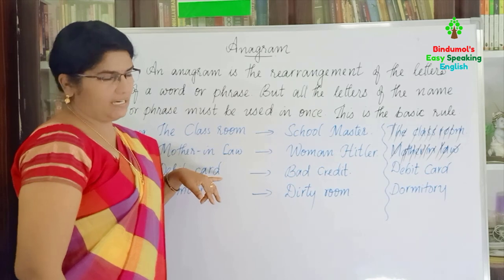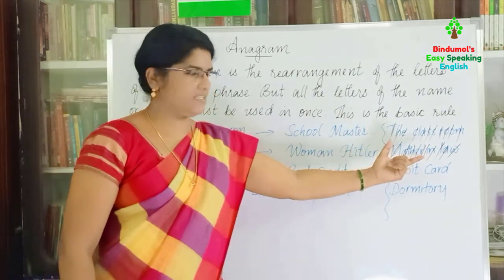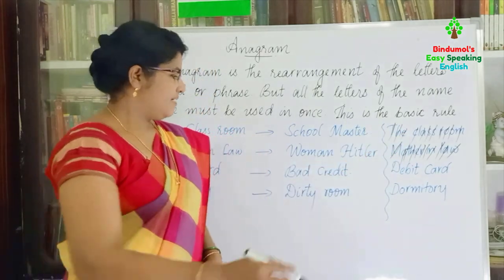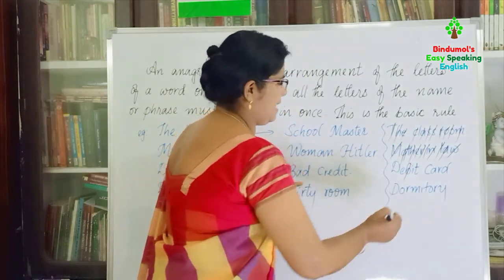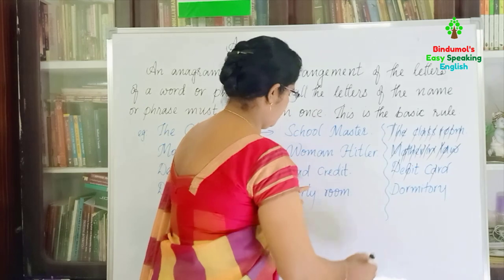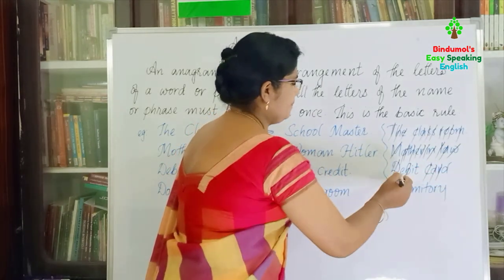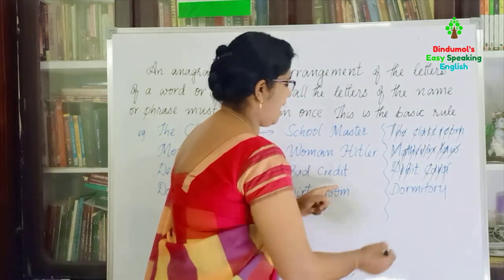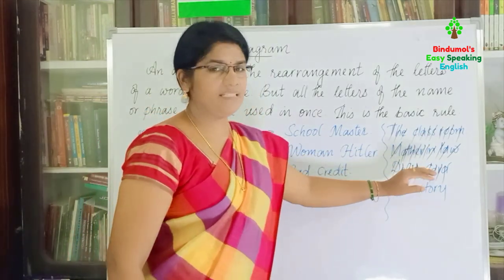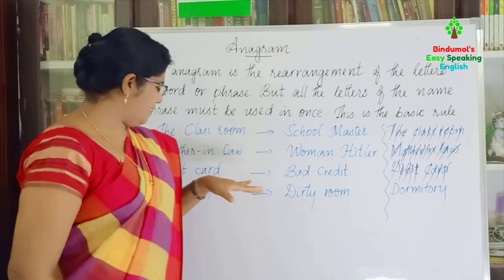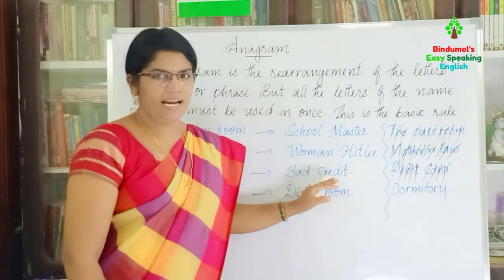And the next example is 'debit card.' From 'debit card' we will get 'bad credit.' We take all the letters — B, A, D, C, R, E, D, I, T — each used once, and we got the word 'bad credit.' From 'debit card' we got 'bad credit.'